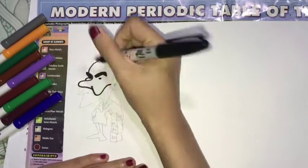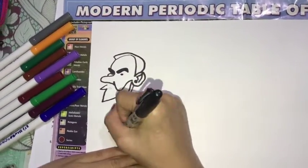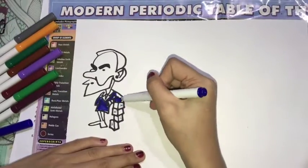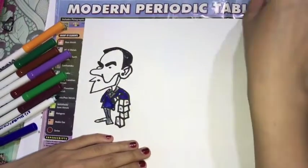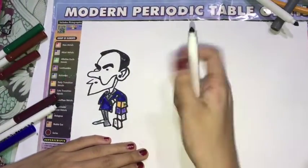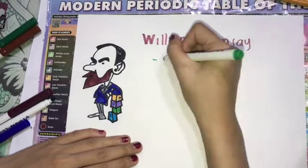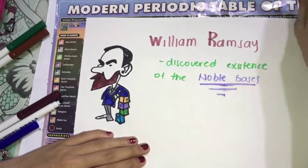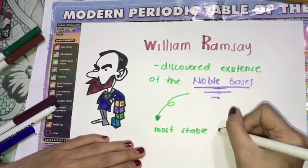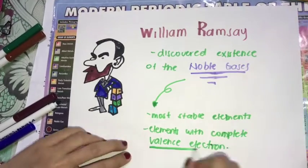William Ramsey discovered the existence of the noble gases, which belong to the last columns of the periodic table, like helium and radon. The noble gases are considered the most stable elements, and they are the only elements with complete valence electrons.